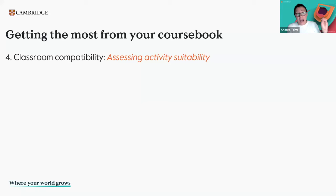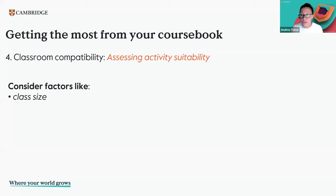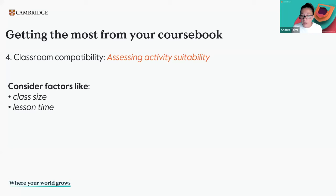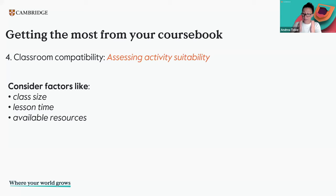Number four, classroom compatibility — assessing activity suitability. Think about your class size: 30 students, 20 students, 5 students? Lesson time — maybe some of you only have 45 minutes or some of you have two hours. And of course the available resources you have for your lesson. Coursebook material is typically organized within a unit where different sections focus on different language skills and systems.